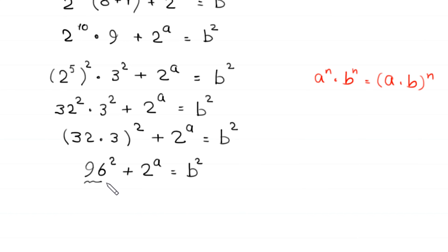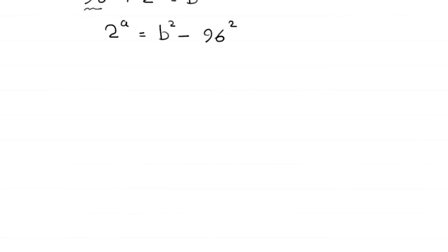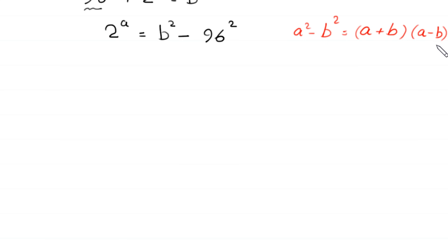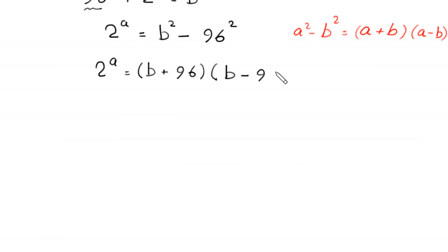We move 96 squared to the right hand side, so 2 to the power a is equal to b squared minus 96 squared. Now here we have a difference of two squares. By using the algebraic identity a squared minus b squared is equal to a plus b times a minus b, this will become 2 to the power a is equal to b plus 96 times b minus 96.